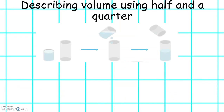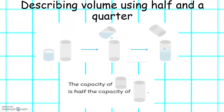We will be describing volume using half and quarter. Now let's look at the small container and the big container. The small container fills half of the large container, so the capacity of the small container is half the capacity of the big container.